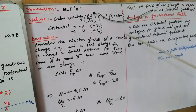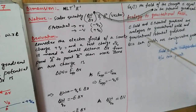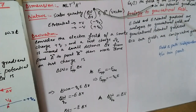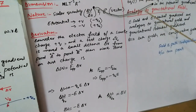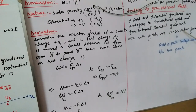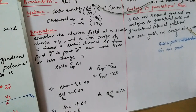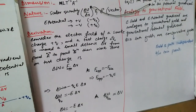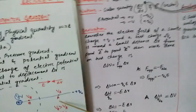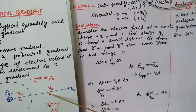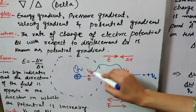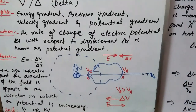As an analogy to the gravitational field, electric potential gradient is analogous to the gravitational potential gradient, because both the electric field and gravitational field are conservative fields. Conservative fields are those which are independent of the path between two points — moving from point A to point B via any path will result in the same net work done.